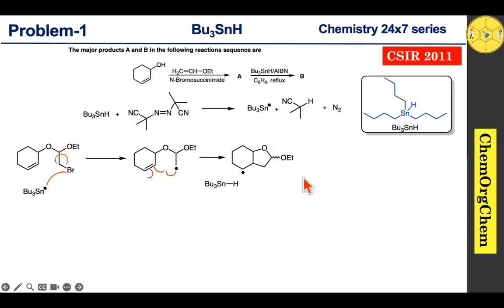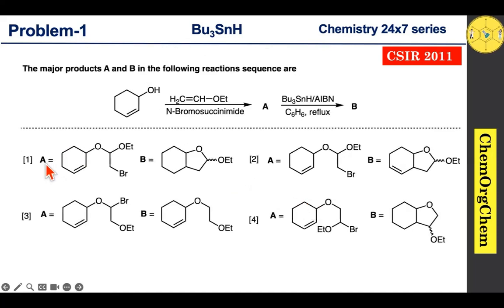This carbon-centered radical readily reacts with tributyltinhydride to abstract the hydrogen atom. This radical abstracts the hydrogen atom, which leads to producing the corresponding product. Based on our discussion, among these four answers, the correct answer for this question is option A.